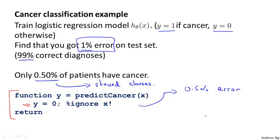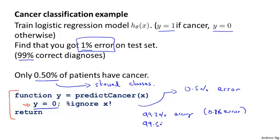We just have a lot more examples from one class than from the other class. And by just predicting y equals 0 all the time, or maybe y equals 1 all the time, an algorithm can do pretty well. The problem with using classification error or classification accuracy as our evaluation metric is the following: if one learning algorithm gets 99.2% accuracy and you make a change and now get 99.5% accuracy, is this an improvement or not?